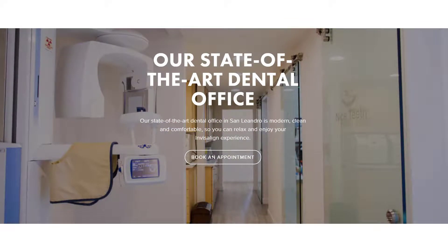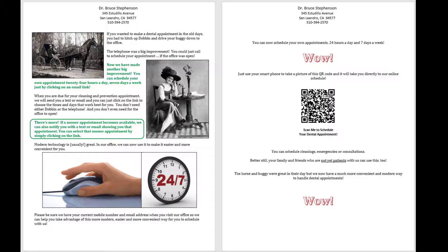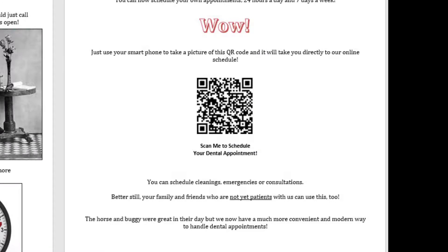I mentioned that you have a link on your website where people can go in and book these appointments, but there's also something else you can do. Here's a little handout that we created to pass out to all the patients that come through the office — it tells how modern we are. On the back of it, it has a QR code. QR codes are everywhere today, so why not use one for that link? This is a way to put a link so patients can self-schedule on a piece of paper that you hand out in your office.